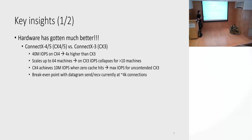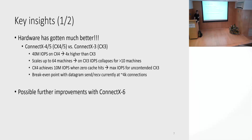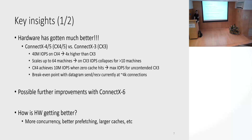The final data point is that the break-even in throughput between send/receive and datagrams is currently at 4,000 connections, and this is expected to improve with ConnectX-6 and ConnectX-7. How is hardware getting better? There are a couple of things: more concurrency to hide the latency of accessing state in main memory, prefetching, and somewhat larger caches. Hardware engineers are in the room, so you should definitely ask them.